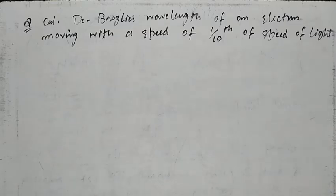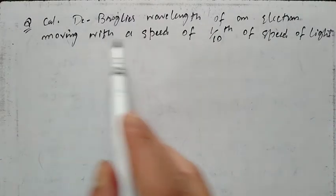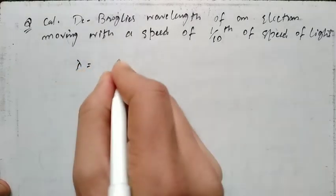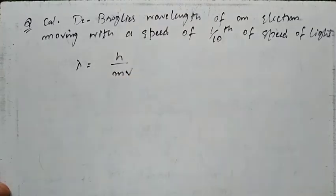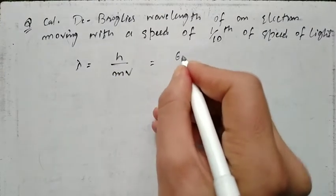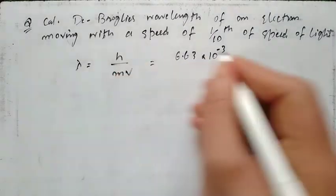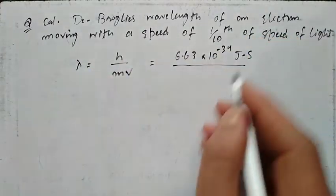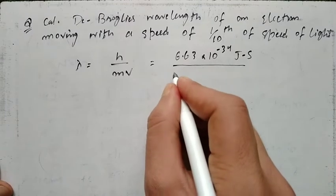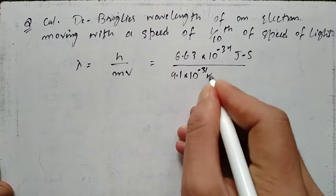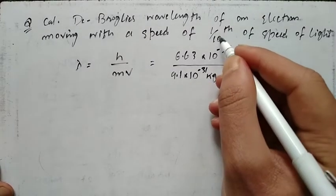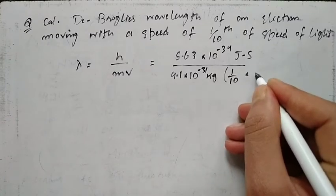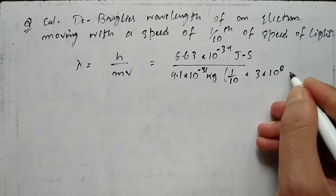First question: Calculate de Broglie's wavelength of an electron moving with a speed of 1/10th of the speed of light. The formula is λ = h/(mv). h = 6.63×10⁻³⁴ J·s, mass of electron = 9.1×10⁻³¹ kg, velocity = (1/10) × 3×10⁸ = 3×10⁷ m/s.